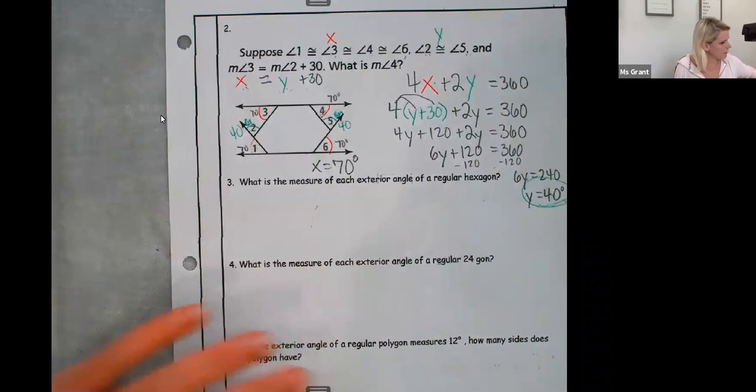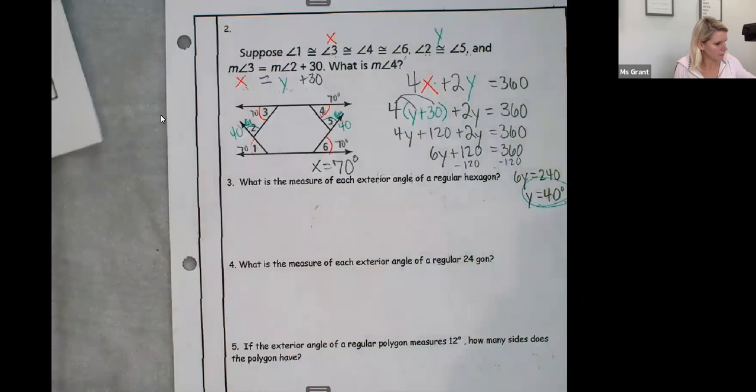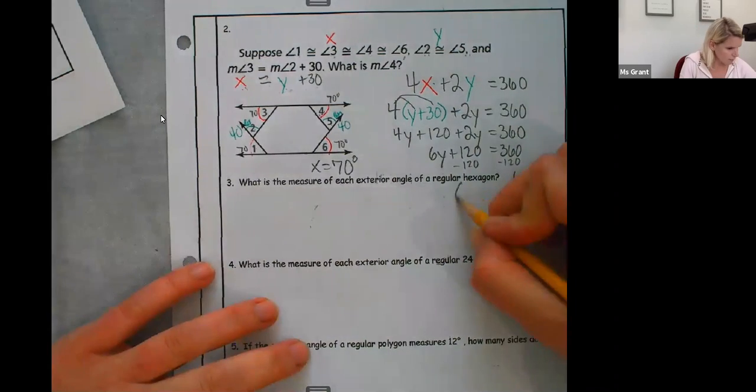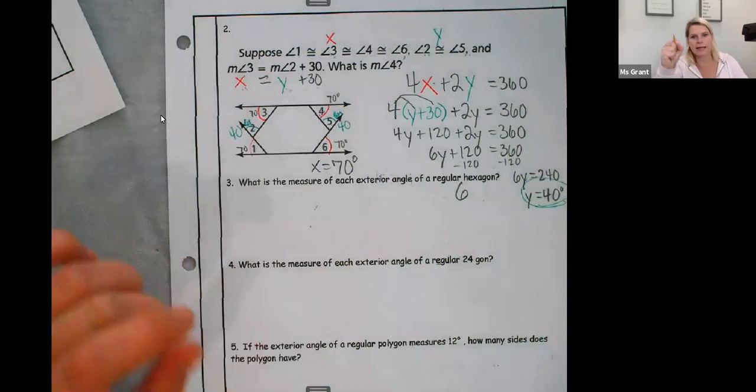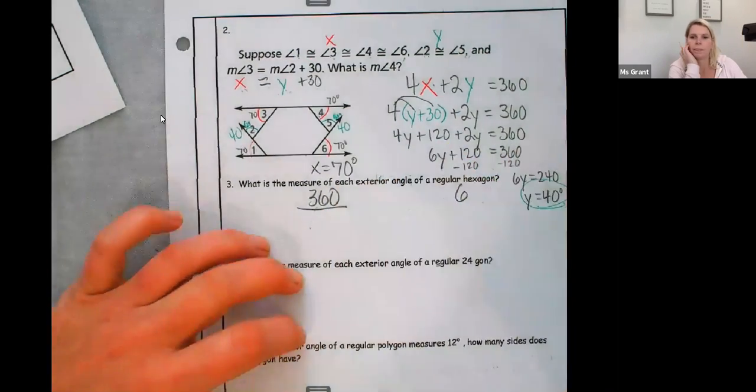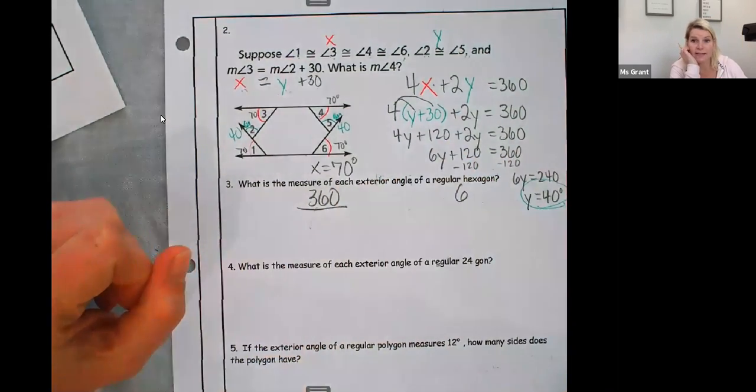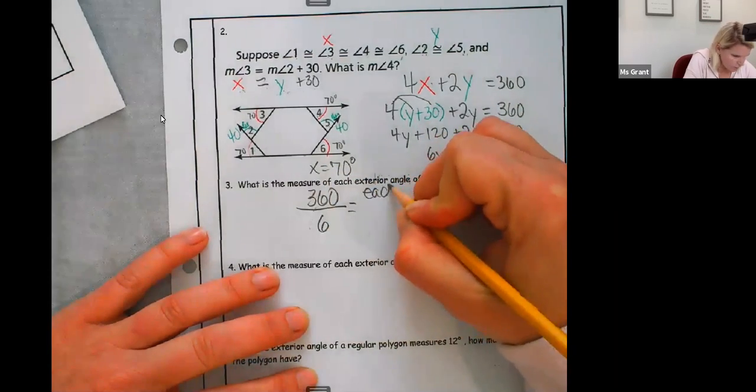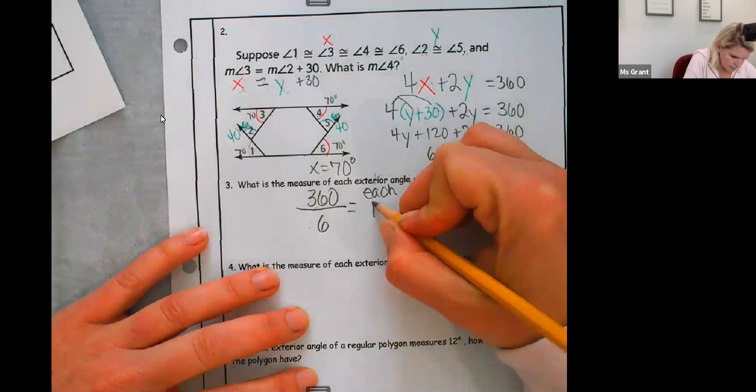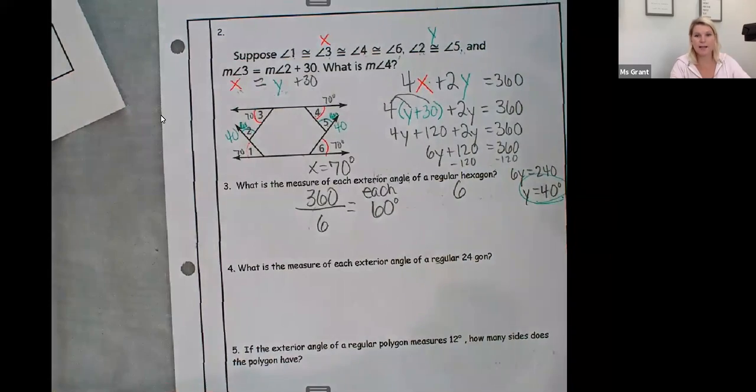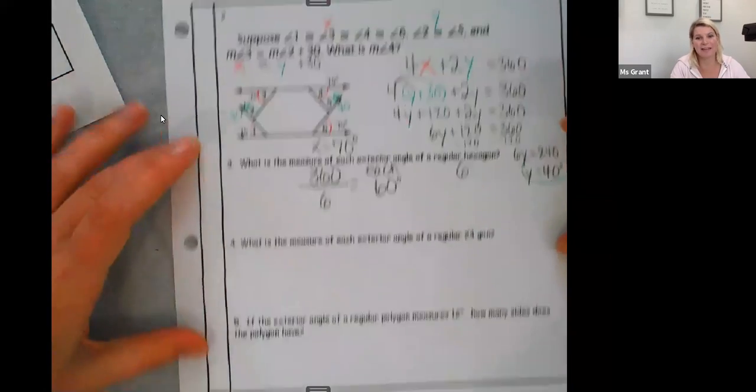All right, I'm going to number three. What is the measure of each exterior angle of a regular hexagon? Hexagon means six sides. Well, I know that all of the exterior angles makes 360. And there are six sides. So I'm going to divide by six. Each angle is 60 degrees. That's easy. And four is easy. And five is easy.